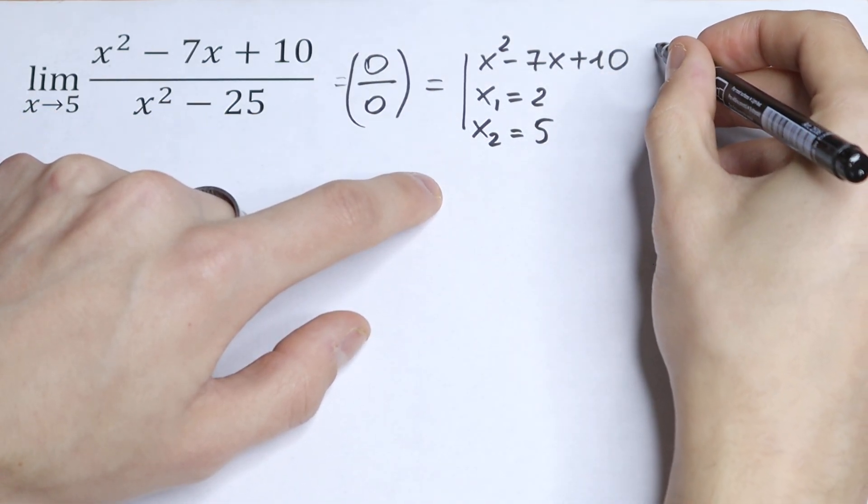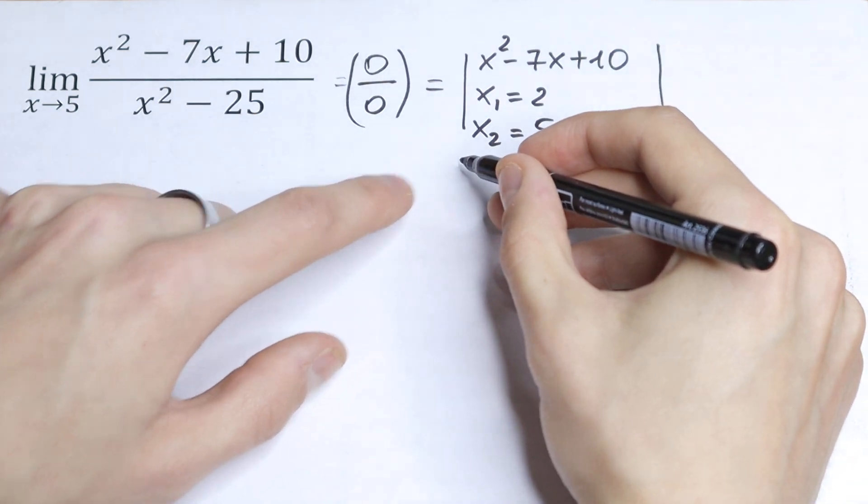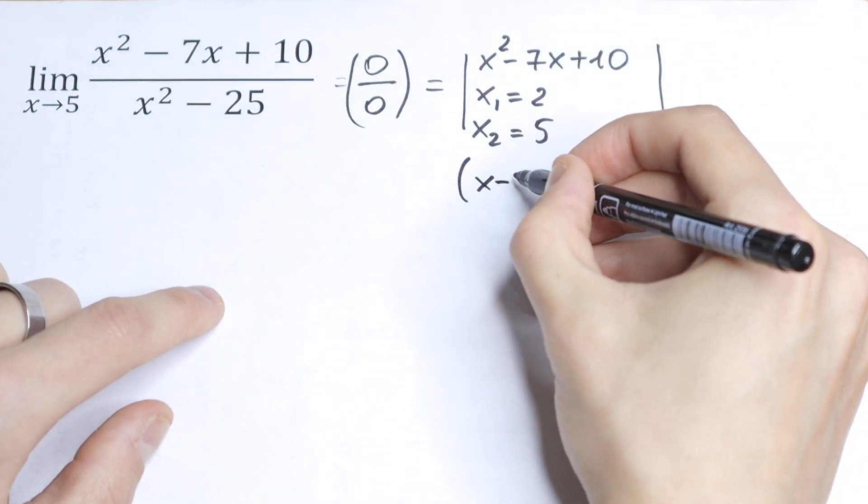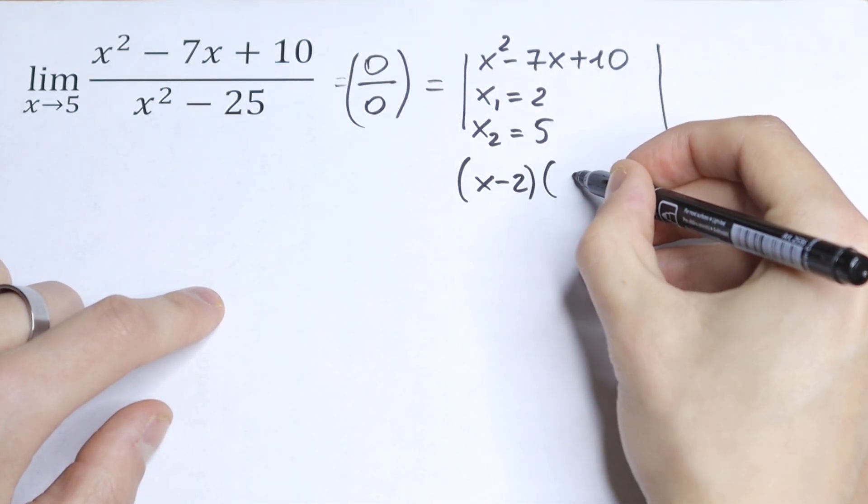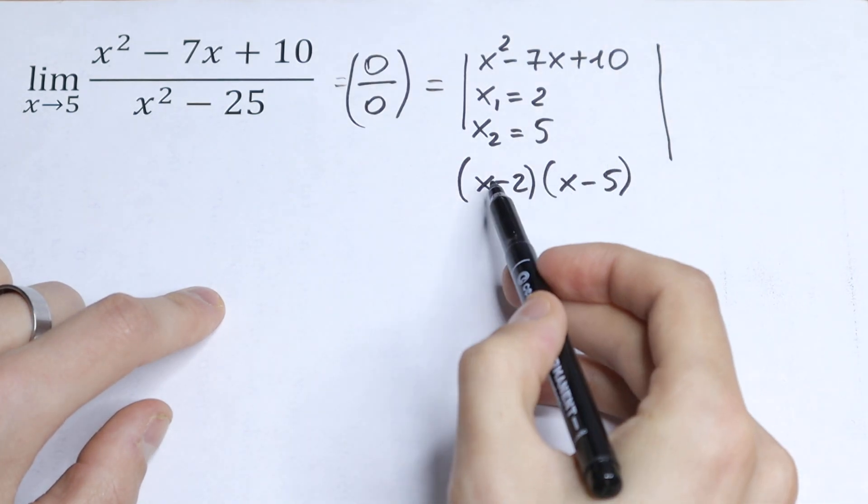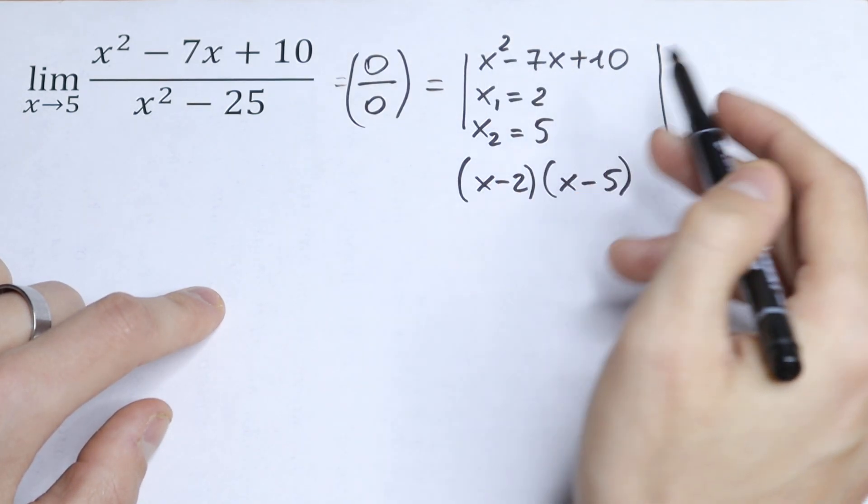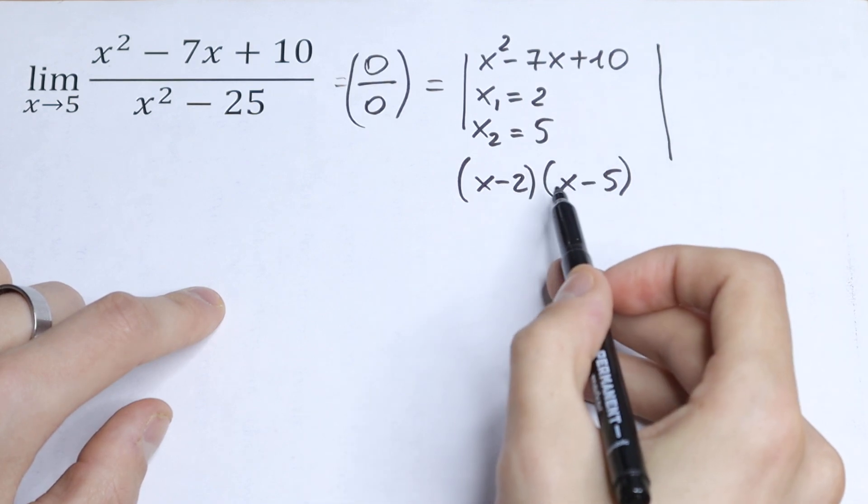So as a result, we can write this quadratic equation as (x minus 2) times (x minus 5). Of course, if we multiply this we'll have the same thing. So this will be our numerator.